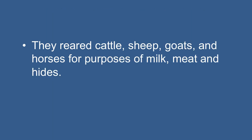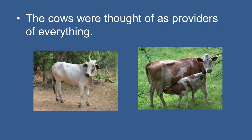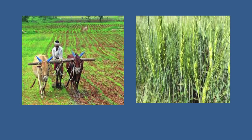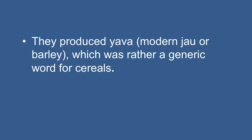After analyzing the literary evidence in the Rig Veda, we find that cows were thought of as providers of everything, and prayers were offered for increase in the number of cattle — showing that cattle rearing was the most important economic activity of the Rig Vedic Aryans. However, this is not to suggest that the early Vedic people had no knowledge of agriculture. A few references show they practiced agriculture to supplement their food requirements, producing yava or barley, which was a generic word for cereals.